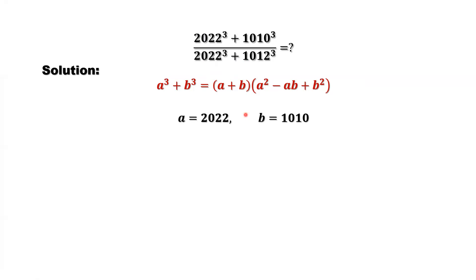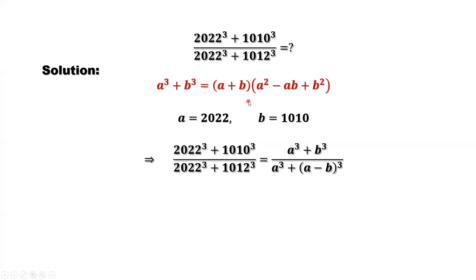So here, we use this formula in a different way so that we can simplify this expression. We define A equals 2022 and B equals 1010. We can use this formula for the numerator. For the denominator, 1012 is A minus B — that is, 2022 minus 1010 equals 1012. So here, 1012 is A minus B.